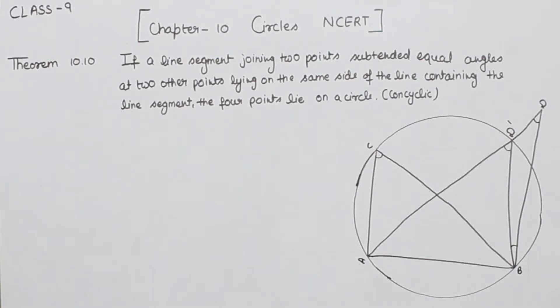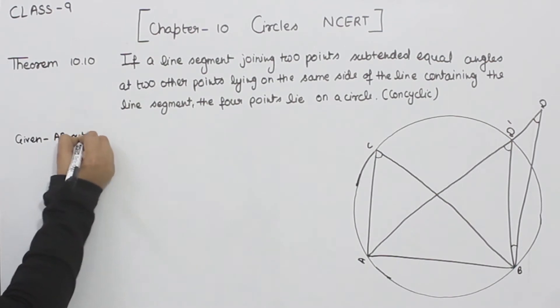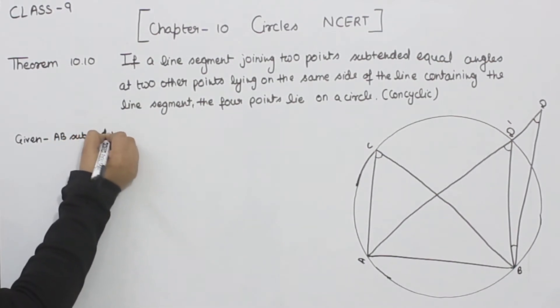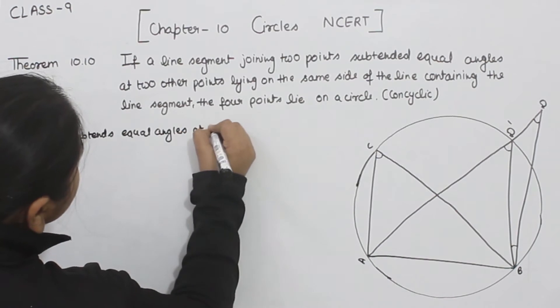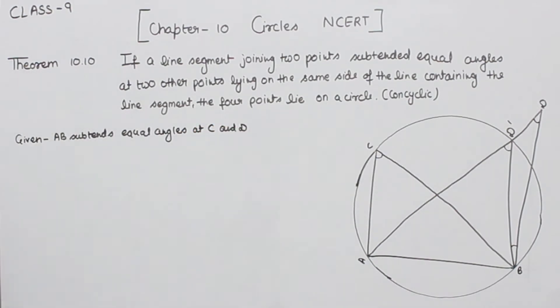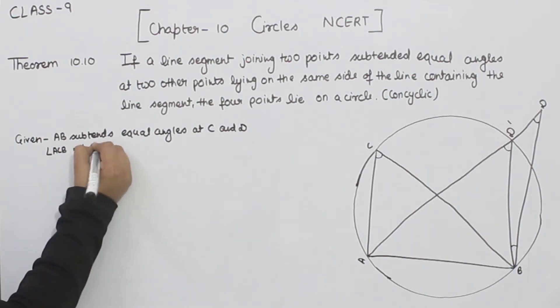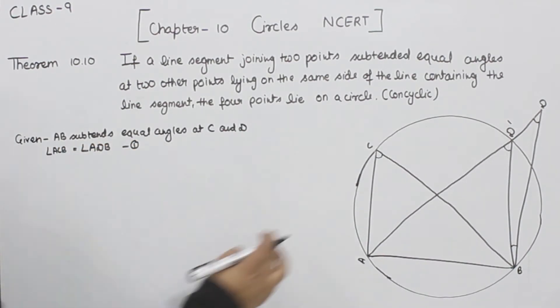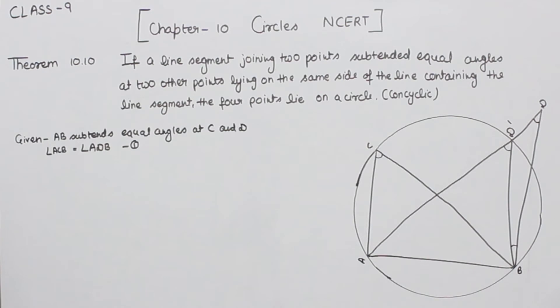First of all, we are going to write what we have given in the question. We have given that AB subtends equal angles at C and D. That means angle ACB is equal to angle ADB. This is the ACB angle and ADB angle. This is equation number one.